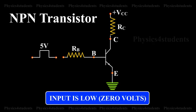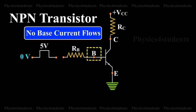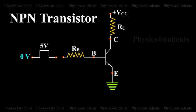When the input is low, i.e. at zero voltage, the base emitter junction is not forward biased. So, no base current flows. Hence, the transistor is said to be off.